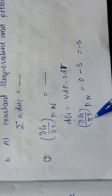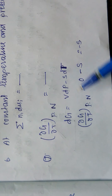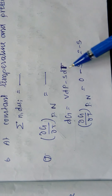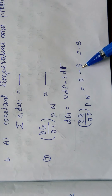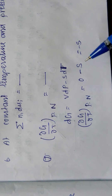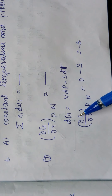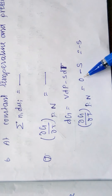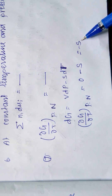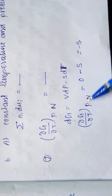On differentiating with respect to dT, the dT cancels and we get -S. So ∂G/∂T at constant pressure and n is equal to -S. This is a very important result.